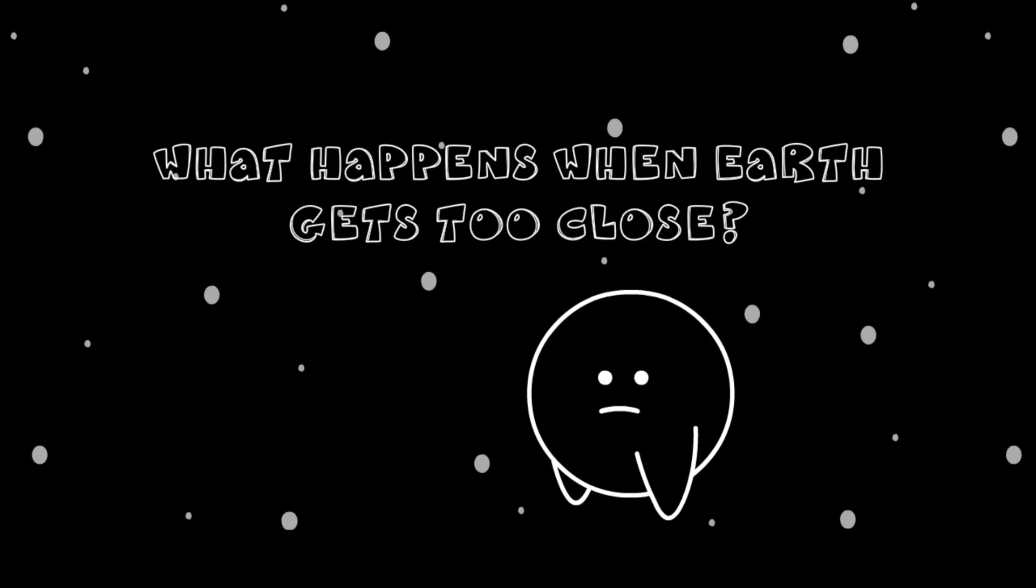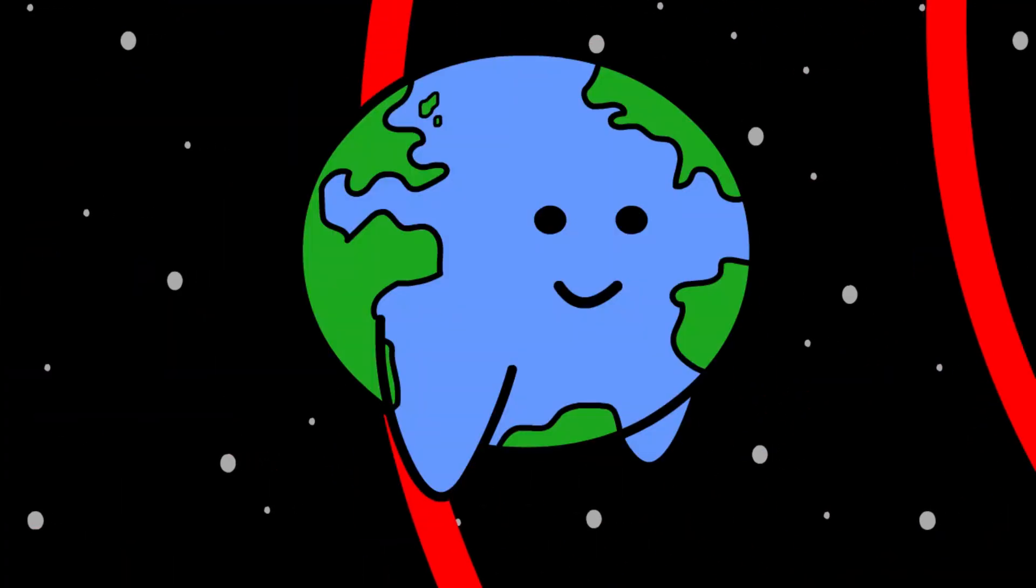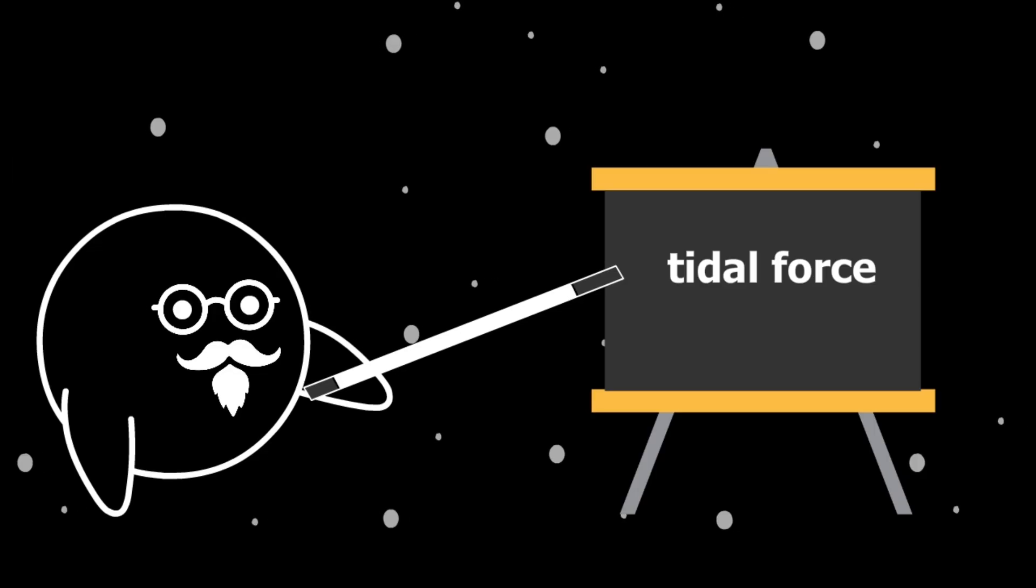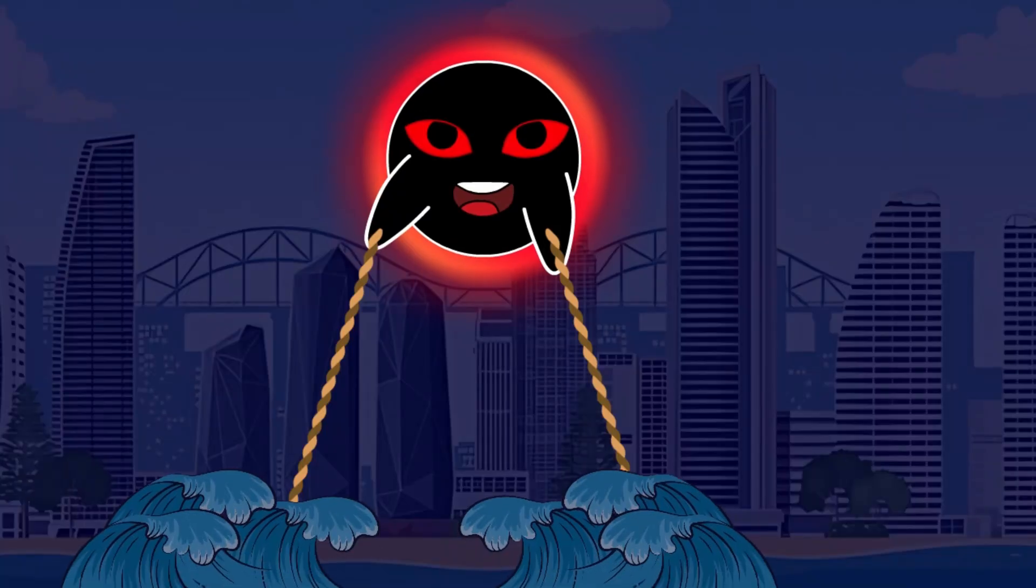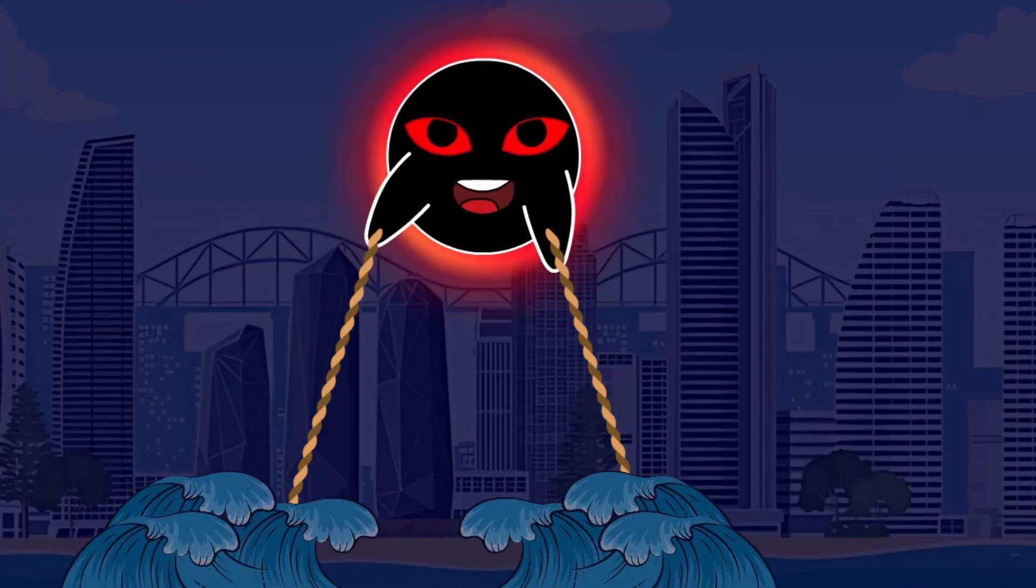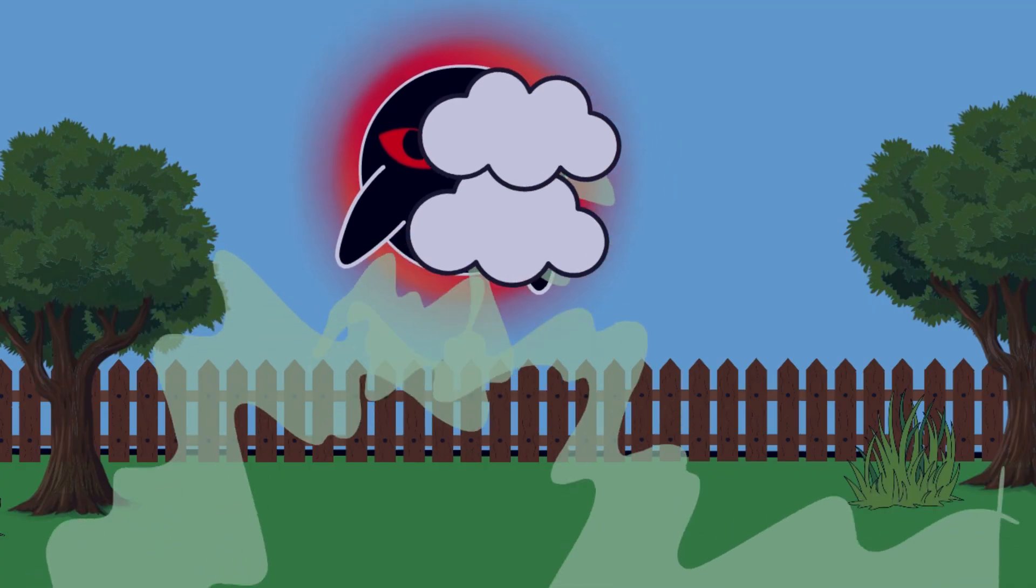So what happens when Earth gets too close? At first, the black hole's gravity would pull on the side of the planet facing it more strongly than the far side. This difference, called tidal force, would start stretching us. Slowly at first—oceans would rise toward the black hole like a tide that never goes out. Atmospheric gases would begin to drift upward, siphoned into space.